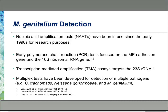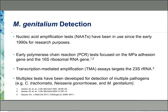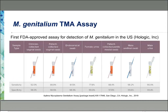Detection methods have been quite productive in development over the past twenty years. Early PCR tests focused on the MgPA adhesion gene and the 16S ribosomal RNA gene. Now we have transcription-mediated amplification assays that use RNA-based targets of 23S ribosomal RNA. Multiplex tests have also been developed for detection of multiple pathogens. We now have the first FDA-approved TMA assay for detection of MGEN in the U.S. from Hologic.